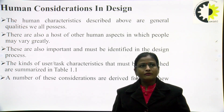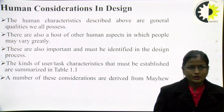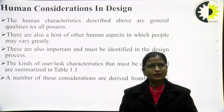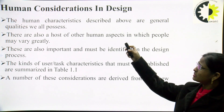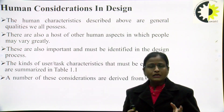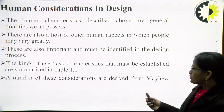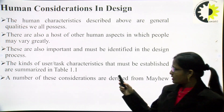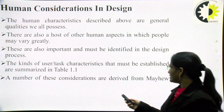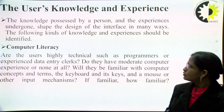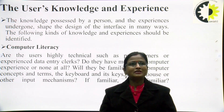The human characteristics described by our general qualities are those we all possess. There are also a host of other human aspects in which people may vary greatly. These are also important and must be identified in the design process. So we have to discuss human consideration — meaning, to design any user interface, what human considerations we take into account. The kind of user task characteristics that must be established are summarized in Table 1.1, and the number of these considerations are derived from Mayhew. The first is user knowledge and experience.